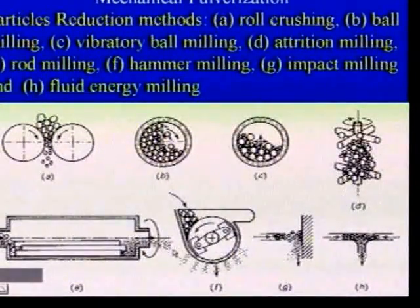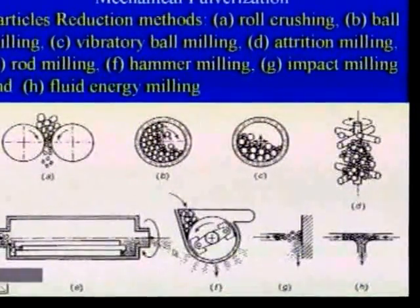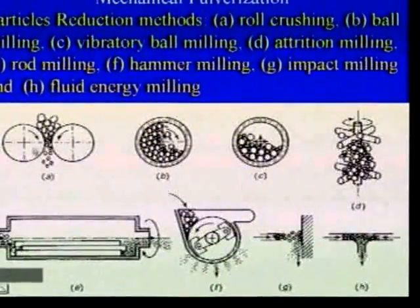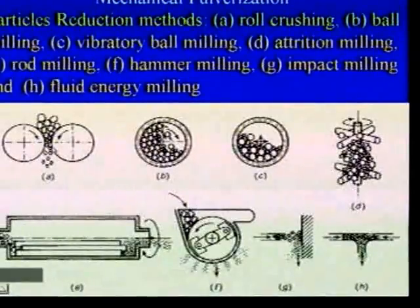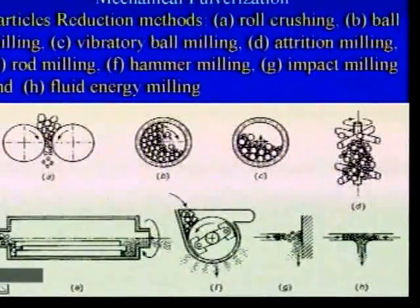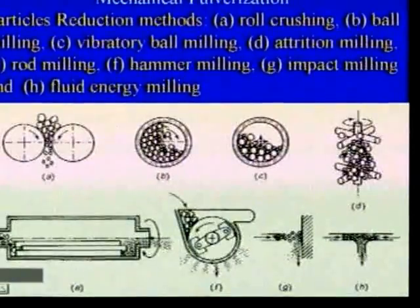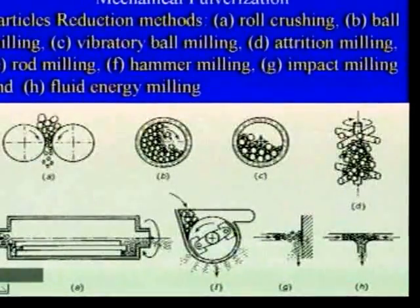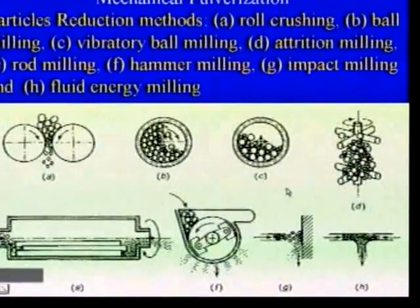Mechanical pulverization — a number of methods are available; these are also called particle reduction methods. In these particle reduction methods: roll crushing, where the solid metal is sized by passing through the rolls; and there is ball milling, vibratory milling, attrition milling, rod milling, hammer milling, impact milling and fluid energy milling. In this particle reduction method, the bigger size particles are reduced into smaller size particles.